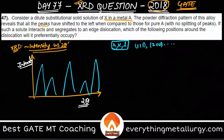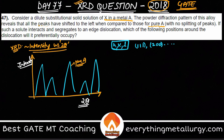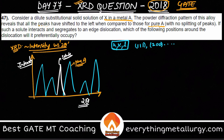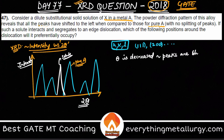The question states that the diffraction pattern of the alloy shows peaks shifted to the left compared to those of pure A. That means when you introduce the solute, the two-theta value is decreasing — the theta value is reduced — and that's why you see the peaks shifting to the left.